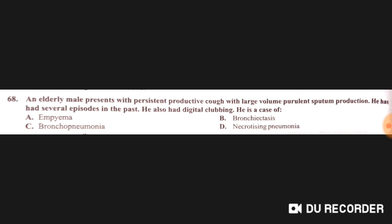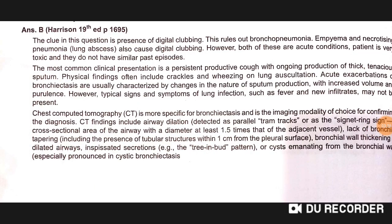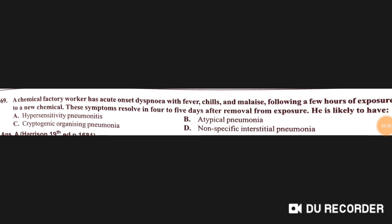An elderly male presents with persistent productive cough with large-volume purulent sputum production. He has had several episodes in the past and also has digital clubbing. This is a case of bronchiectasis.